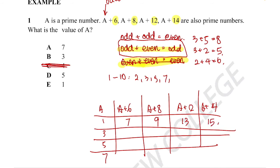Is that correct? No, because 9 and 15 are divisible by more than themselves and 1. For A = 3, we get 3 + 6 = 9, which isn't prime. Let's move on.